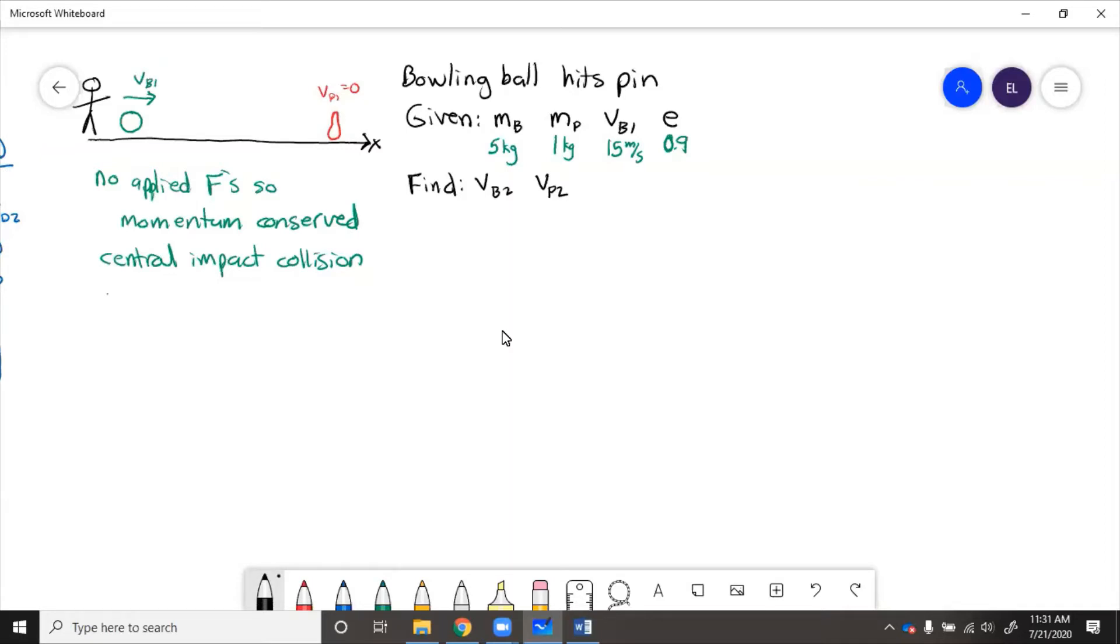So we can write out conservation of momentum. We'll have MBVB1 plus MPVP1 equals MBVB2 plus MPVP2. Well, we know the pin is static initially, so we can cross this one out. But we have two unknowns, VB2 and VP2.